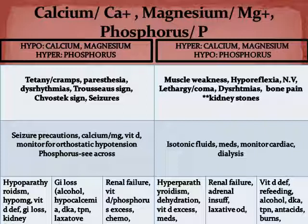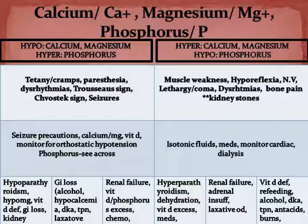Causes vary for each electrolyte. Too much phosphorus can be caused by renal failure, vitamin D, phosphorus excess, chemotherapy, excess enema, and acidosis. Hypercalcemia can be caused by hyperparathyroidism, dehydration, vitamin D excess, medications, and immobilization. Too much magnesium can be caused by renal failure, adrenal insufficiency, and laxative overdose. Too little phosphorus can be caused by vitamin D deficiency, refeeding syndrome, alcohol, DKA, TPN, antacids, and acid burns.